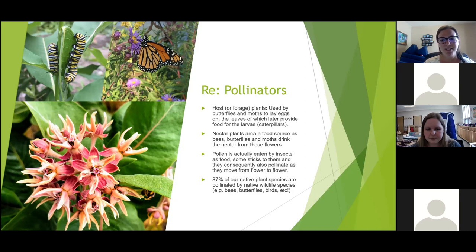There are also nectar plants, which are a food source for bees, butterflies, and moths. These pollinators also eat the pollen of our native plant species. 87% of our native plant species in Alberta are pollinated by wildlife species — the bees, the butterflies, the birds.